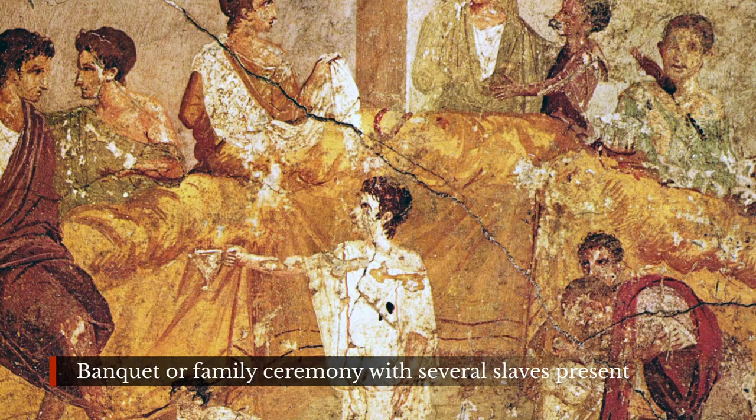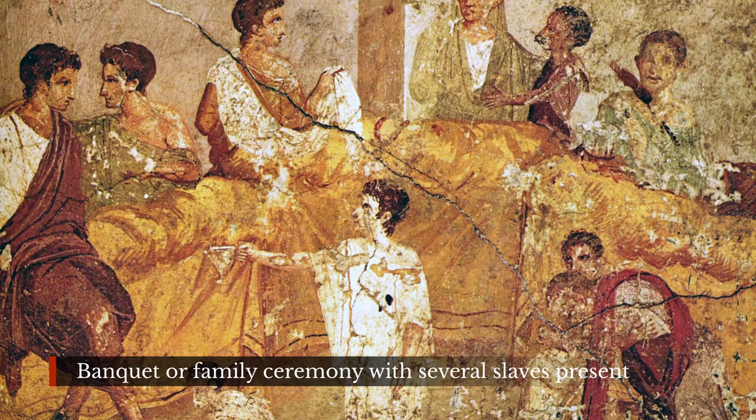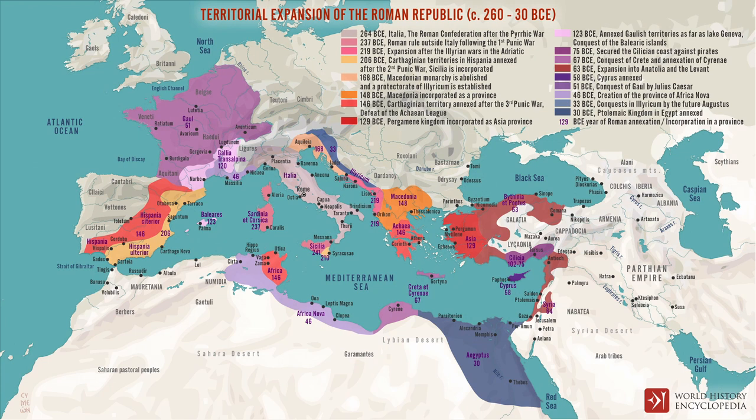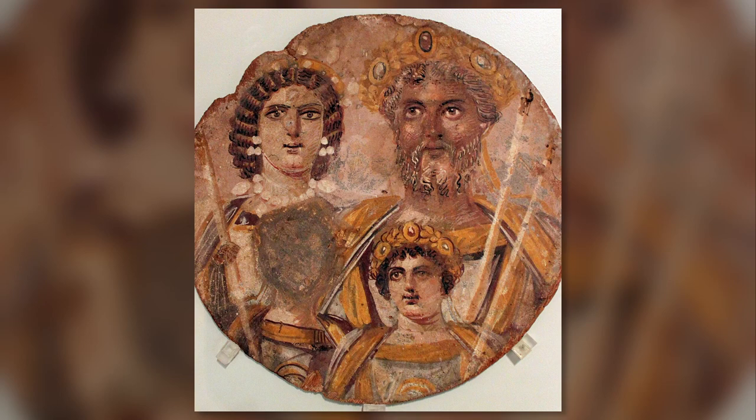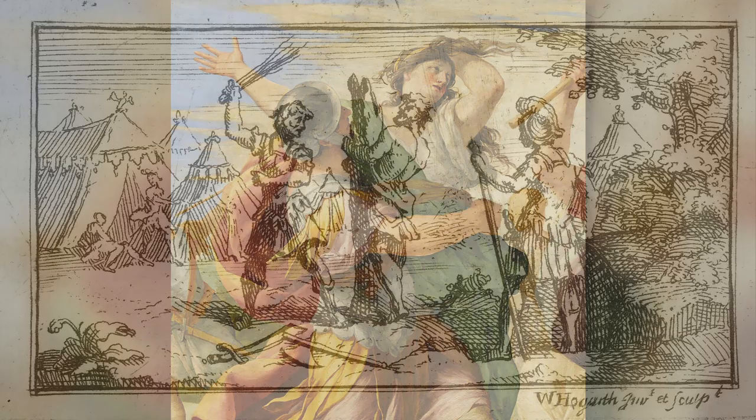Slavery was a widespread institution in ancient Rome with one in five people serving as slaves during the time of the Empire, but the institution of slavery went back to the Kingdom of Rome, dated between 753 and 509 BCE. It developed during the Republic between 509 and 27 BCE before becoming the most prevalent form of free labour during the Roman Empire from 27 BCE to 476 CE. Slaves were originally prisoners of war but in time could be those sold by their families to relieve a debt, those kidnapped by slavers, convicted criminals, or those born into slavery.